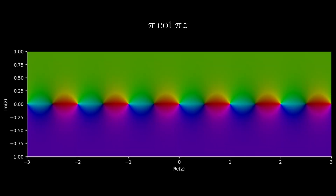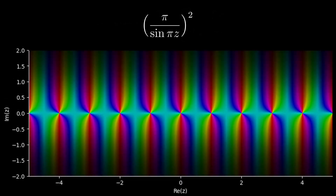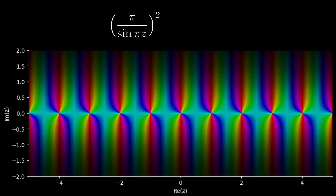For example, the cotangent is meromorphic on the entire complex plane. It has poles at every integer, and we get a formula similar to a partial fraction decomposition. Another example of a meromorphic function has poles of order 2 at all integers, which is reflected in its corresponding formula.